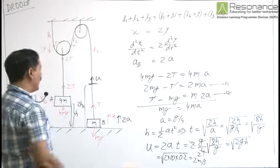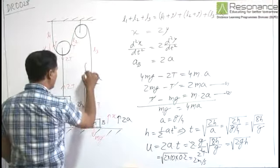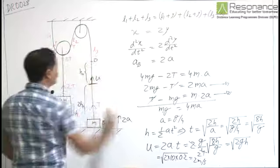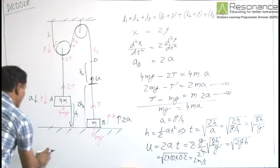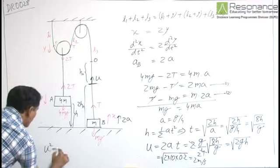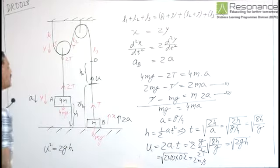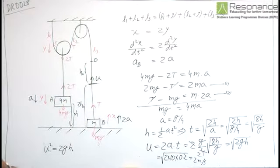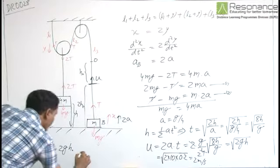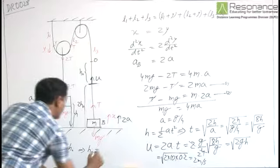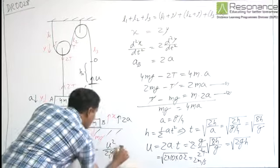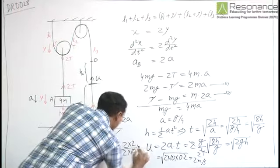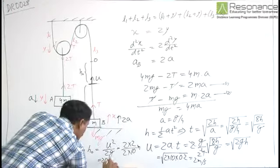With this speed u, how much more height could it reach? Let us assume this height to be h naught where the speed u will drop to 0. Here from we can write u square is equal to 2g h naught, because in this time the string becomes slack and there is no tension, there is downward acceleration g.